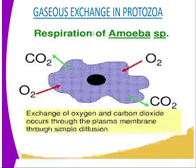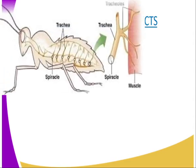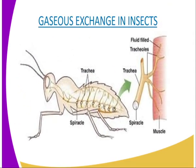I would like us now to look at the gaseous exchange in insects. Remember, insects belong to kingdom Insecta. Insects are generally small animals. The small size is quite advantageous to the animal in terms of gaseous exchange, since their surface area to volume ratio is large. However, being larger than the amoeba, there is need for the development of a breathing system.